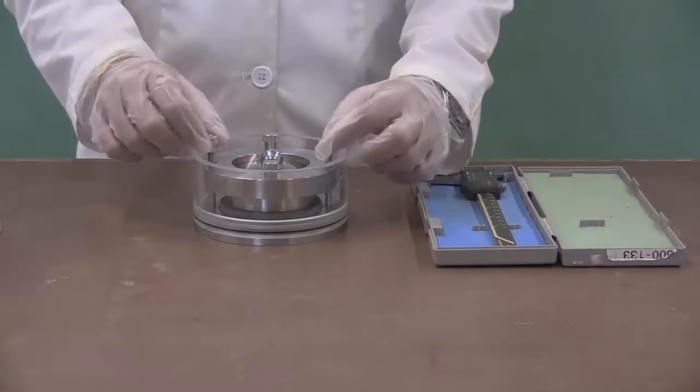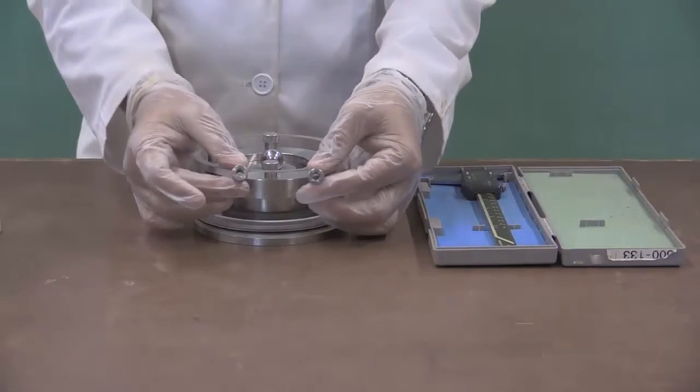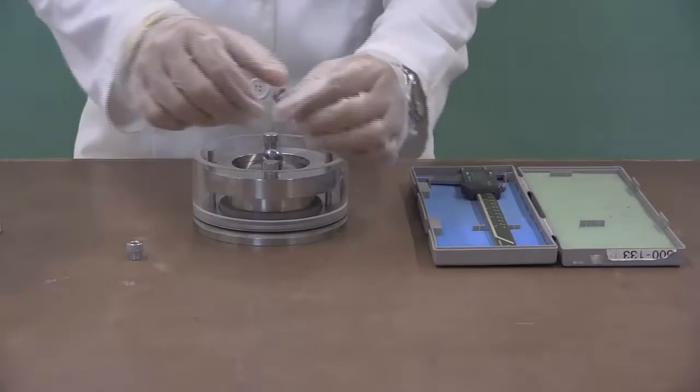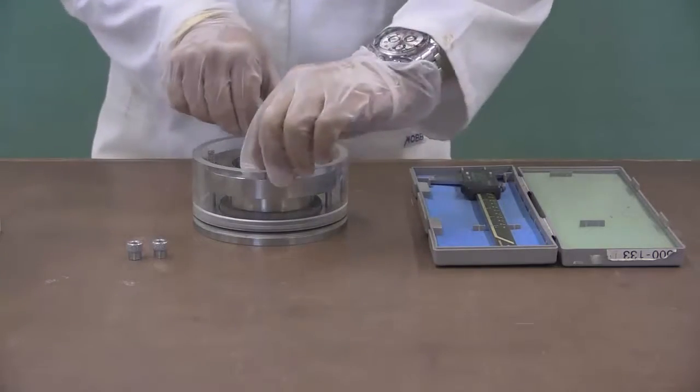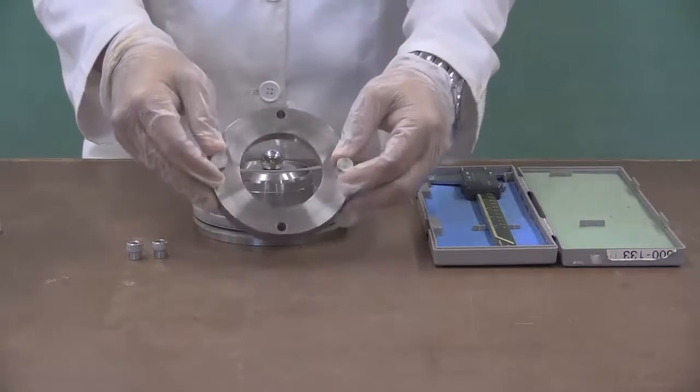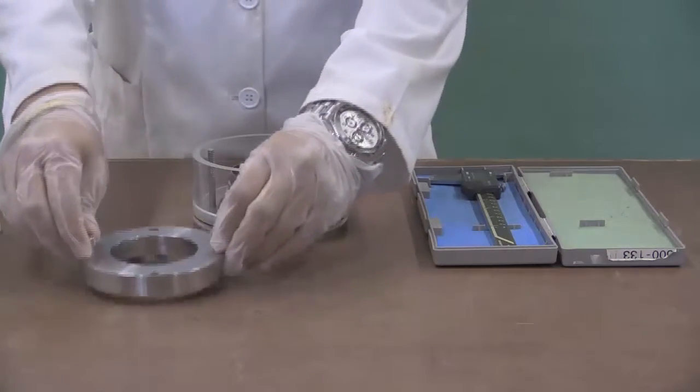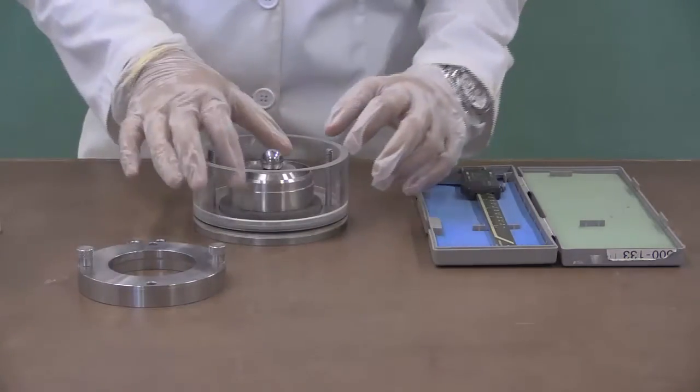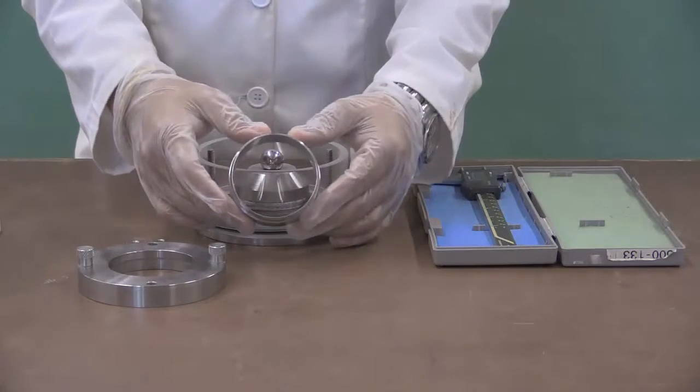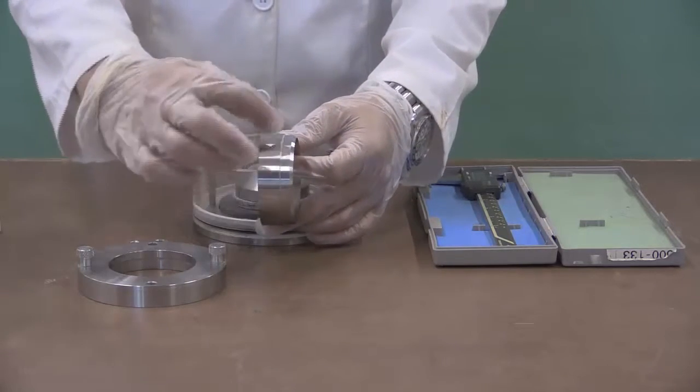You can start by unscrewing the two round nuts that hold the positioning ring in place. Take the positioning ring out of the odometer cell and this will provide access to the rigid odometer ring. Take the odometer ring out. Note that it has a sharpened edge at the top.